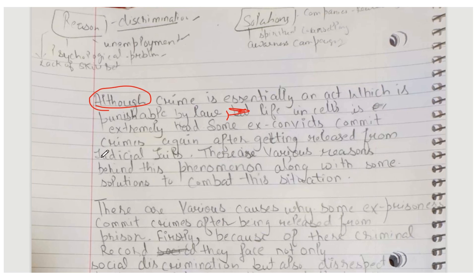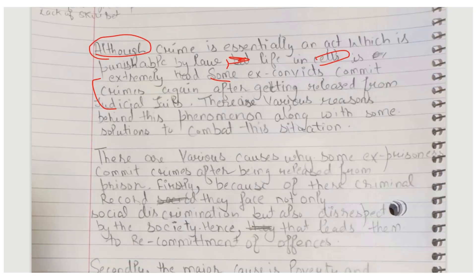Some ex-convicts commit crimes again after getting released. You can write it this way: 'it has become prevalent' — this is a better way to phrase it because it sounds more formal. Also, use 'imprisonment' instead of 'cells' — that's more appropriate here.